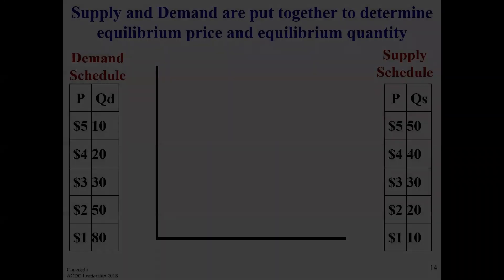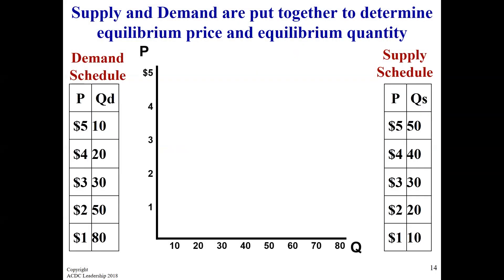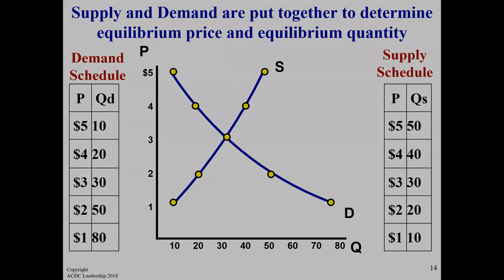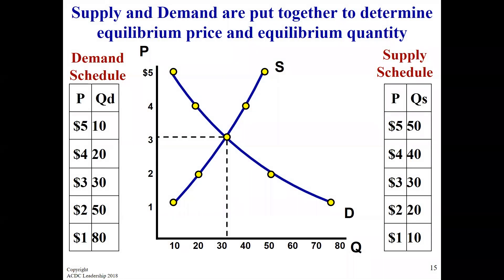Here we go — we're going to put it together. Supply and demand together. Demand, downward sloping. You could just put like P and Q — you don't really need all the numbers going across.